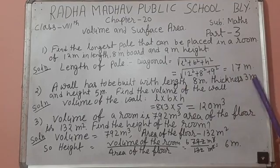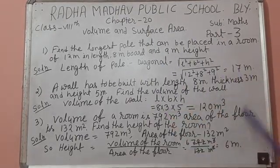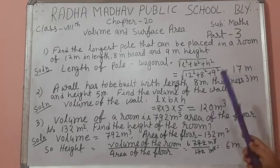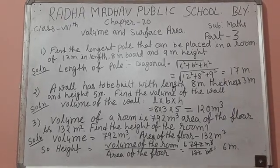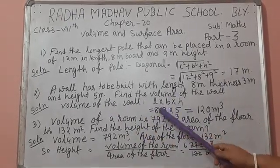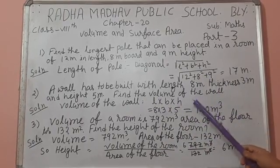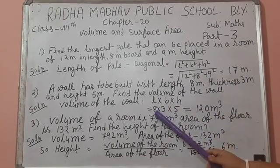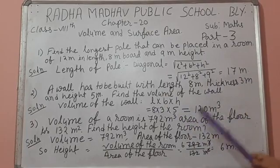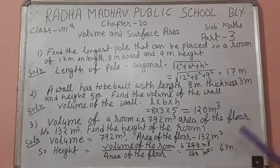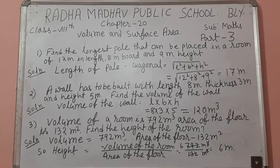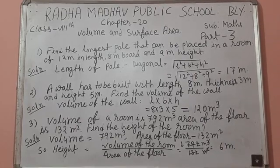So length, breadth, and height. That means this wall you consider as a cuboid. Volume of the wall is length into breadth into height. That means 8 into 5 into 3 is equal to 120 m cubed. Volume always comes in cube units.